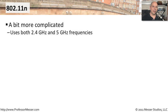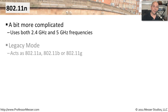With 802.11n, it became a little bit more complicated, but still there was a need to maintain some compatibility between the different versions. One of the challenges with n is that it uses both 2.4 gigahertz and 5 gigahertz frequencies at the same time. There's also a legacy mode built into 802.11n so that the n access point can pretend to look like an a, a b, or a g access point, giving you some compatibility right there.